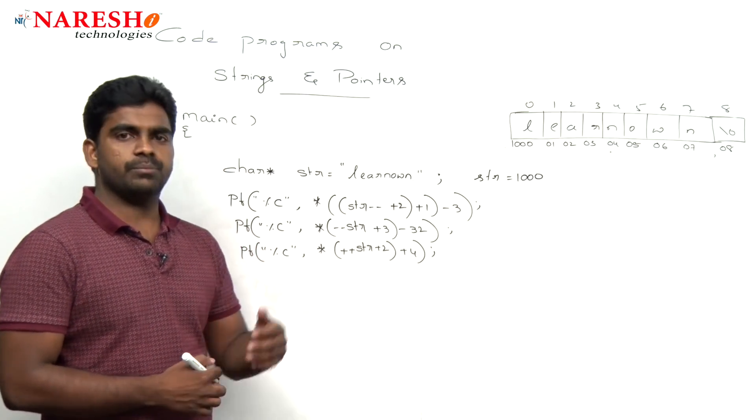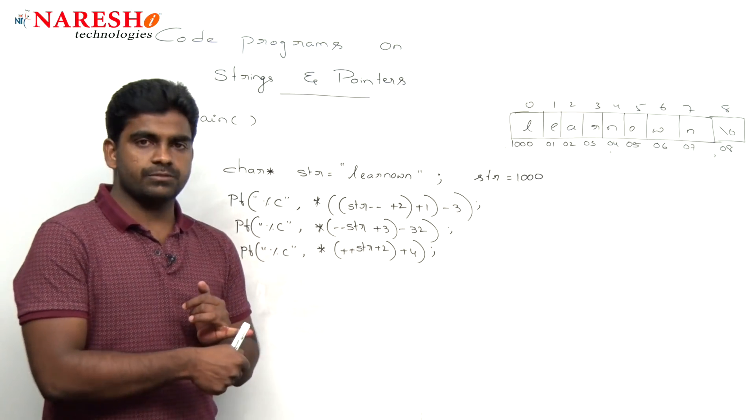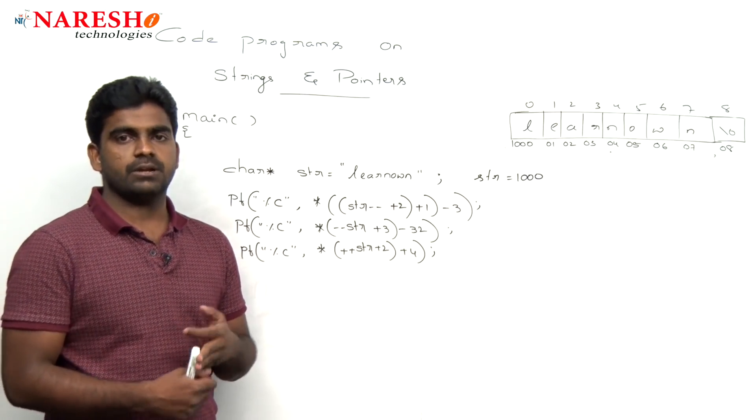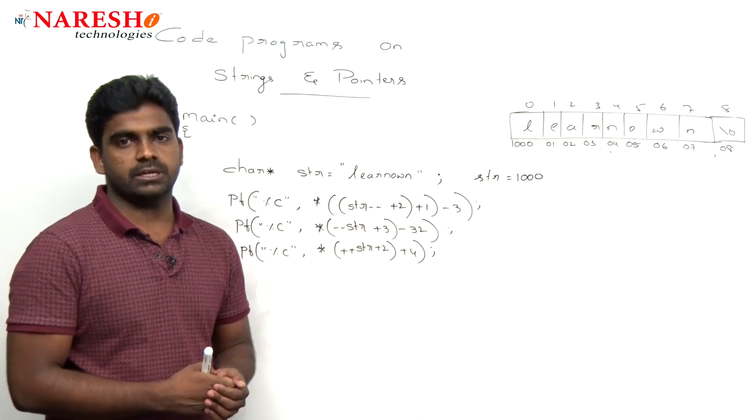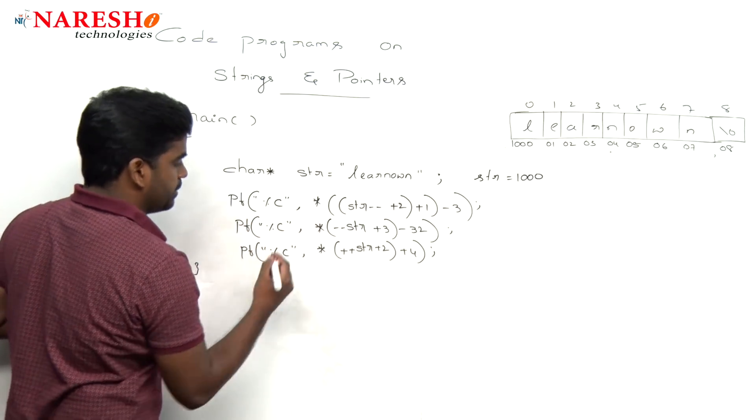As we know in previous examples we have seen, modify operators take the first priority, next pointers, and then remaining arithmetic operators. Of course, parenthesis has the highest priority than all.